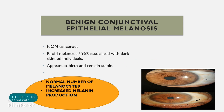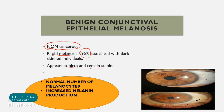Benign conjunctival epithelial melanosis is also called racial melanosis because it is seen in dark-skinned individuals about 95% of the time. It is non-cancerous, present at birth, and tends to remain stable throughout life — it does not increase in size or become more dense over time.